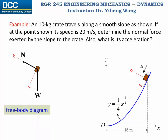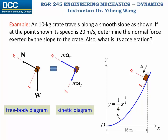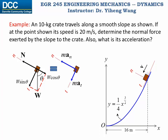Now we can draw the free body diagram of this crate. It is subjected to only two forces: the weight and the normal force exerted by the slope on the object. We equate this to the kinetic diagram with the two acceleration components a_t and a_n. We need to resolve the weight force w into tangential and normal components. Keep in mind that the normal force is always perpendicular to the slope, so the normal force is already along the normal direction. We resolve weight w into a component w·sin(θ) along the tangential direction and another component w·cos(θ) along the negative normal direction. From geometry, θ is the same angle made by the tangential axis with the horizontal line.